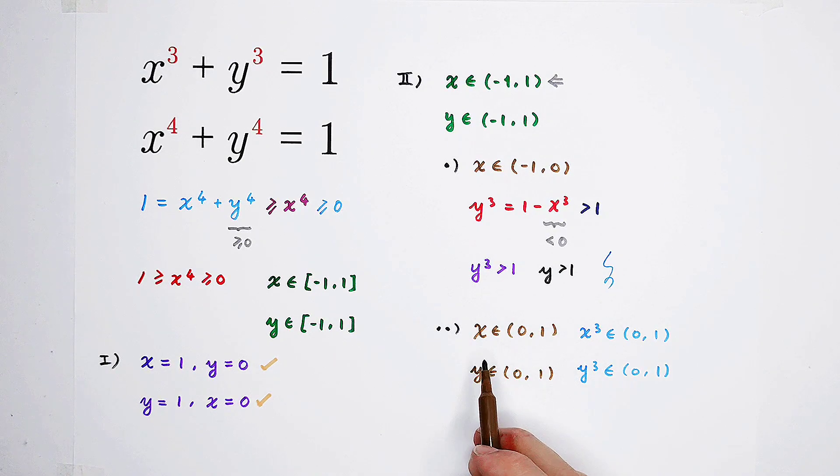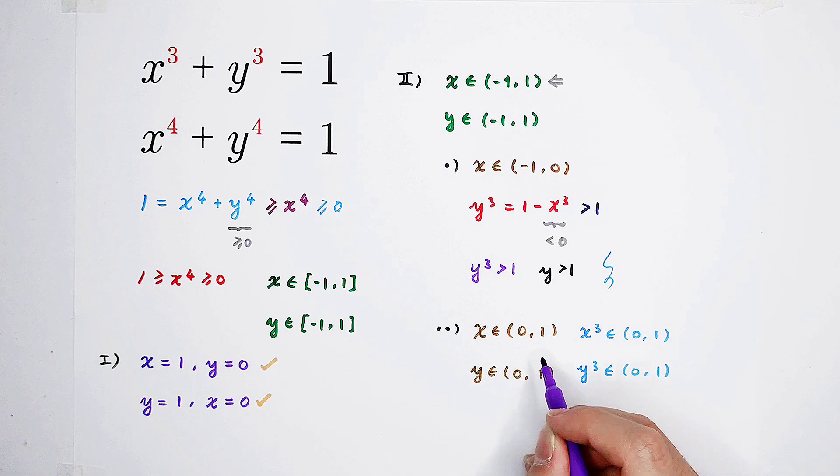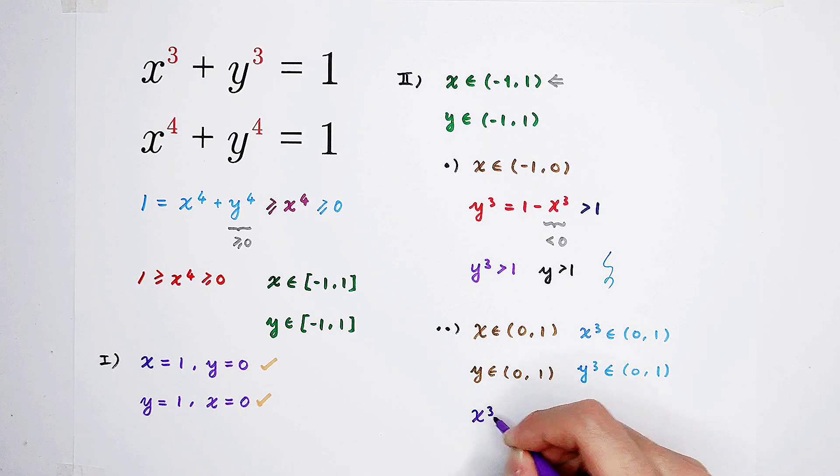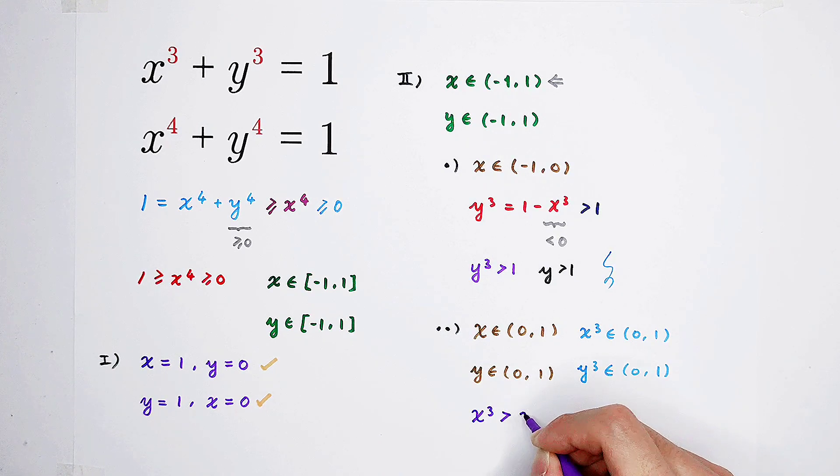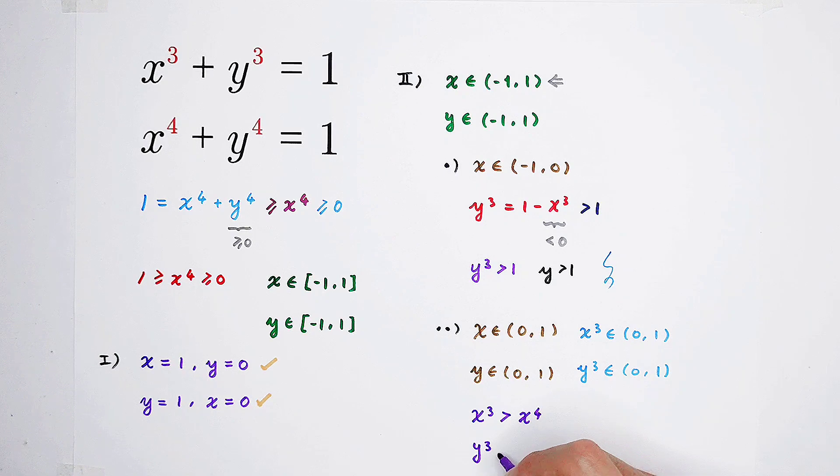Of course, then we can get the interval of y. y should be greater than 0, at the same time smaller than 1, just like x, the same interval. If x is greater than 0, smaller than 1, then x cubed is of course greater than x to the power 4. And y cubed is also greater than y to the power 4. For example, 0.1. 0.1 all cubed is 0.001, and 0.1 all to the power 4 is 0.0001. Of course,